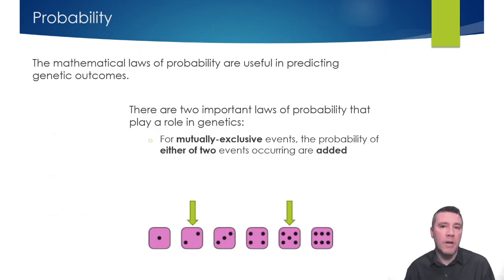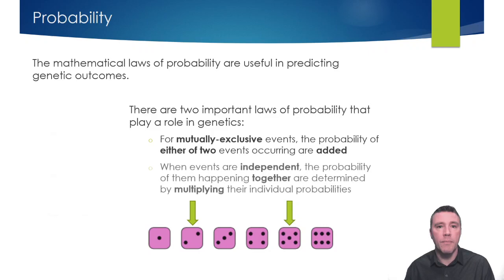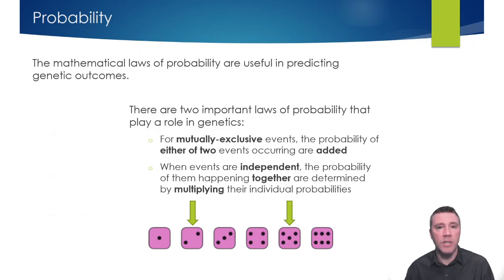The second important aspect of probability involves the likelihood of two independent events occurring together. In this case, the individual probabilities of those events are multiplied. Therefore, the probability of rolling a two and a five would be one-sixth times one-sixth, equaling one-thirty-sixth.